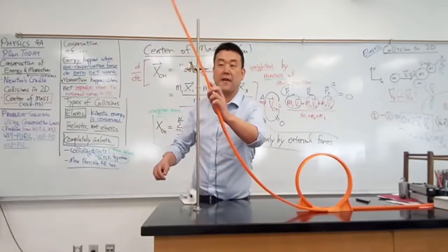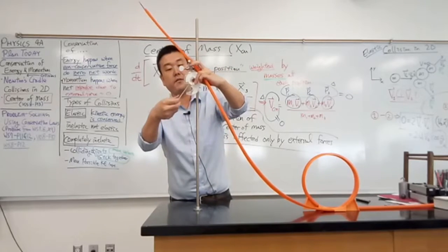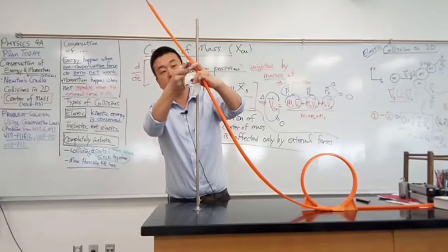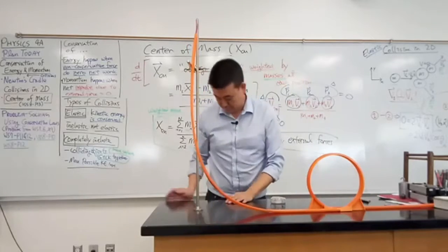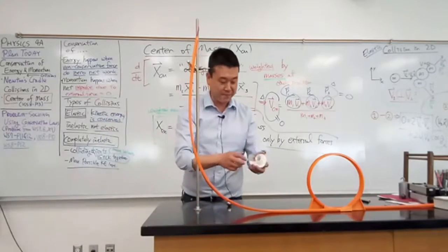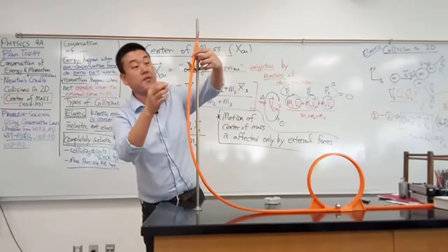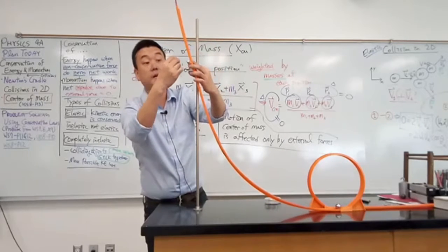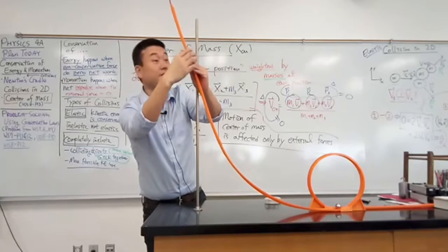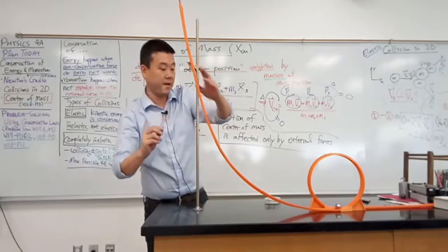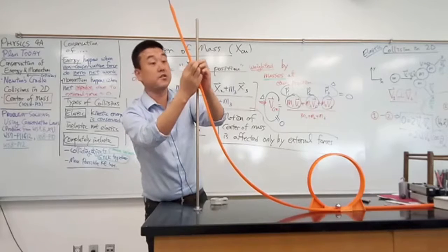The way we can make a problem we can analytically solve is to set up the track at some height, so that I can use the potential energy to give the ball some amount of kinetic energy that I can actually calculate. Since it won't depend on my exact push, I'll be able to come up with an analytical expression for that.